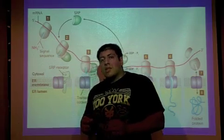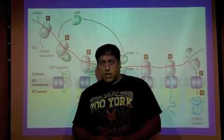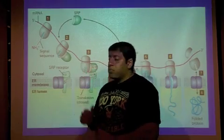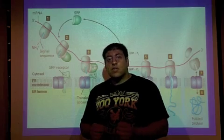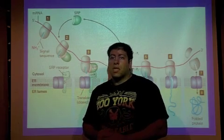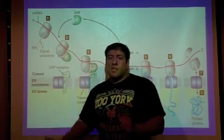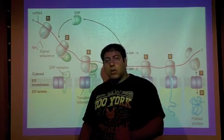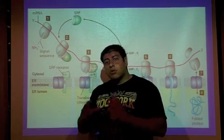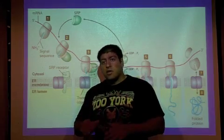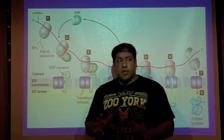So again, the anatomy of the SRP is important to know. The SRP has a P9-slash-14 domain. This is the part that's responsible for binding to the ribosome, and it binds specifically to the A-site of the ribosome. By binding to the A-site, this puts translation on pause. So translation has been stopped temporarily.